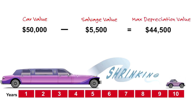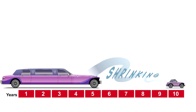If you take the cost of $50,000 and subtract the salvage value of $5,500, the maximum accumulated depreciation is $44,500. All methods — straight line, double declining balance, sum of the year's digits, units of production — eventually your total accumulated depreciation will be the same. The difference between methods is the timing of depreciation. Our journal entry: debit the car for $50,000, credit cash or payable for $50,000.